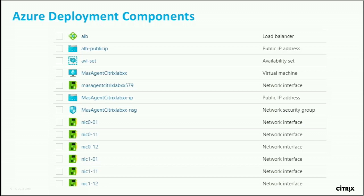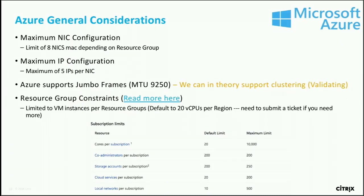The solution template deploys a number of components to provide high availability with NetScaler. The key component is ALB — we use the Azure load balancer in front of the NetScaler VPX to provide high availability. Other components include the different interfaces and IP addresses assigned. All these get deployed automatically with the solution template so you don't have to build them yourself. You can go back and add applications to ALB later. Azure has a limit of eight NIC cards and a maximum of five IPs per NIC.